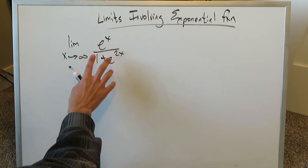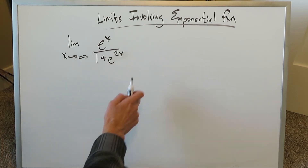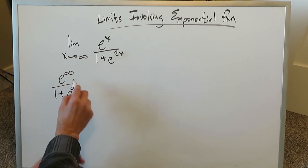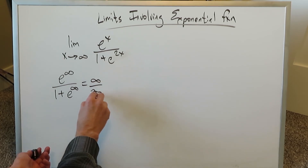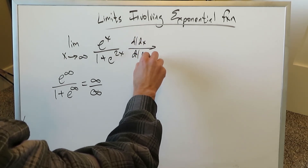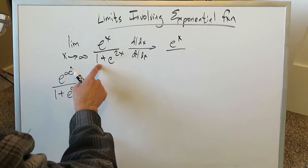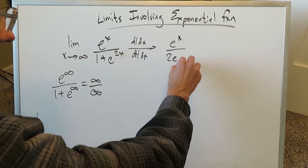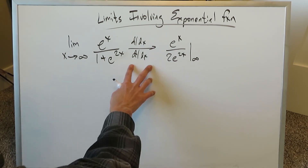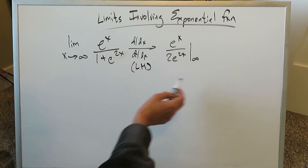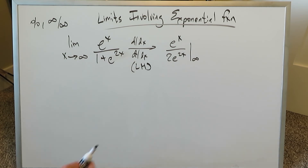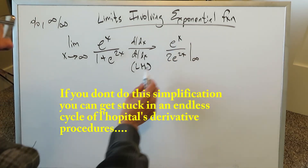Let's look at the last question: limit as x approaches infinity of e to the x divided by (1 plus e to the 2x). Plugging in infinity gives e to the infinity divided by 1 plus e to the 2·infinity — essentially infinity over infinity, an indeterminate form. Applying L'Hôpital's rule: derivative of the numerator is e to the x; the 1 disappears and the derivative of e to the 2x is 2e to the 2x. Before testing again, we should see if we can simplify.